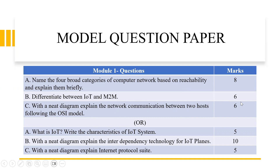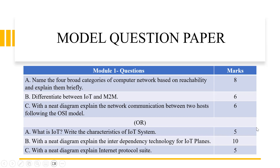Be clear that wherever they have specified neat diagram, first you draw the diagram, then start explaining each and every layer of that diagram neatly. The next set of questions: what is IoT and the characteristics? Here you can start writing about IoT and its different types of characteristics in detail. With a neat diagram, explain the interdependency technology for IoT planes — the total marks is 10 marks. Finally, with a neat diagram, explain internet protocol suite, which is five marks.